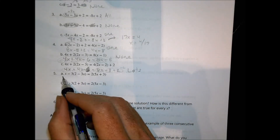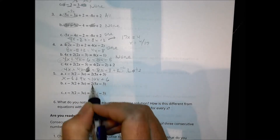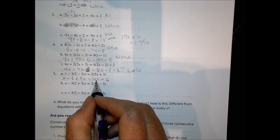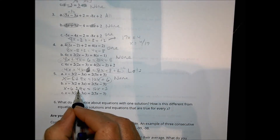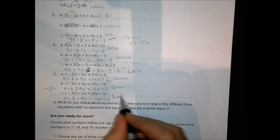For number 5: x minus 6 plus 9x equals 10x plus 6. The x values combine (1+9=10), so 10x equals 10x, but negative 6 does not equal positive 6 — no solution. Next: x minus 6 minus 9x equals 10x minus 3. Combining gives negative 8x minus 6, and with the 10x on the right, that's one solution. Finally: x minus 6 plus 9x equals 10x minus 6, which gives 10x minus 6 equals 10x minus 6 — infinite solutions.